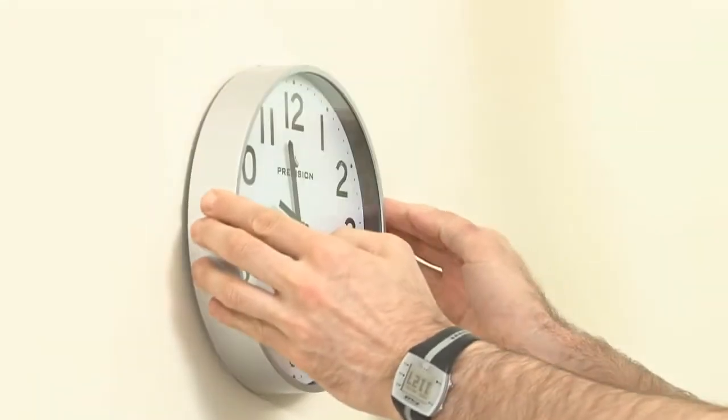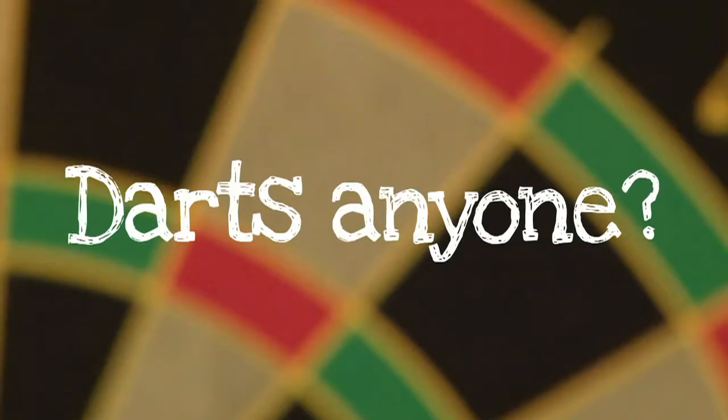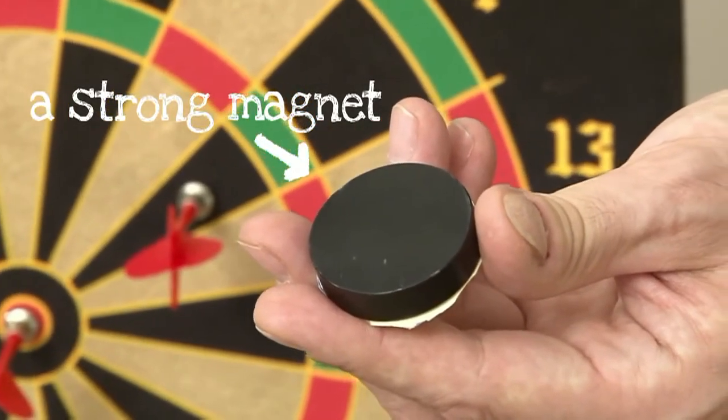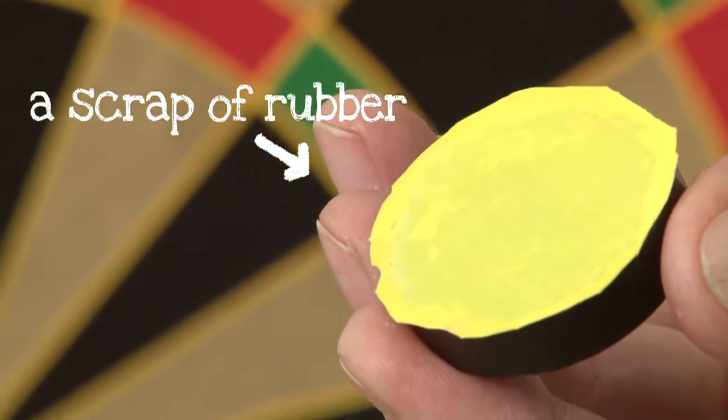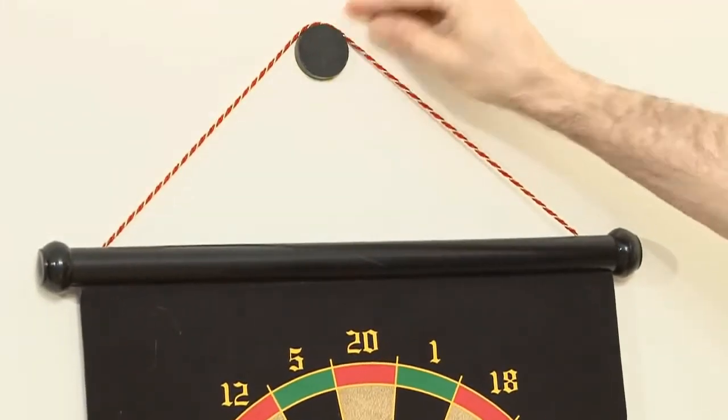Then we put the clock on the wall. Simple. We then fancied a game of darts, so we got a magnetic dartboard and a strong magnet. On the back of the magnet, we put a scrap of rubber. Why, I hear you ask? Well, basically to help provide more friction and to stop it sliding down the wall. And bullseye, it worked perfectly.